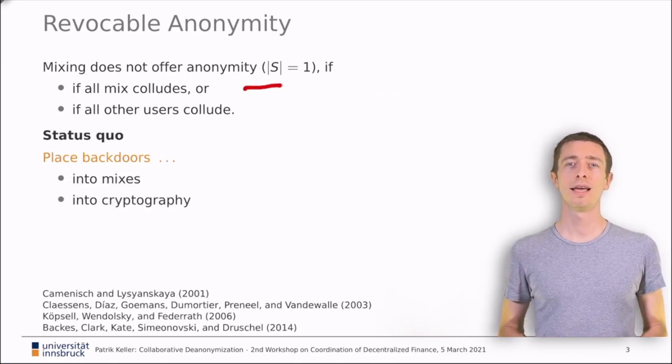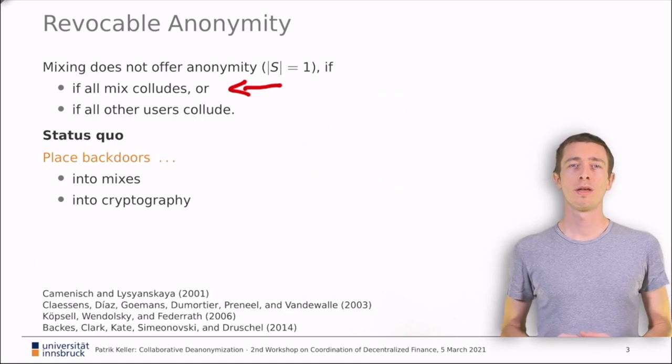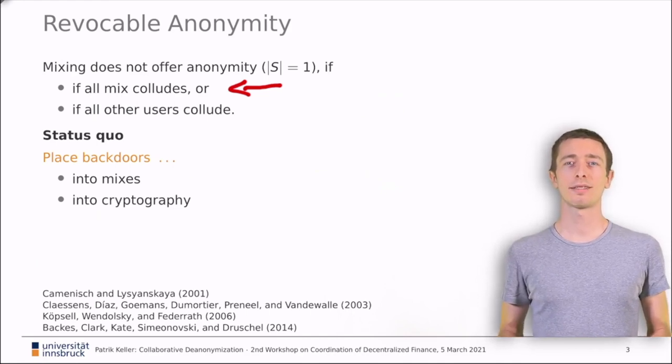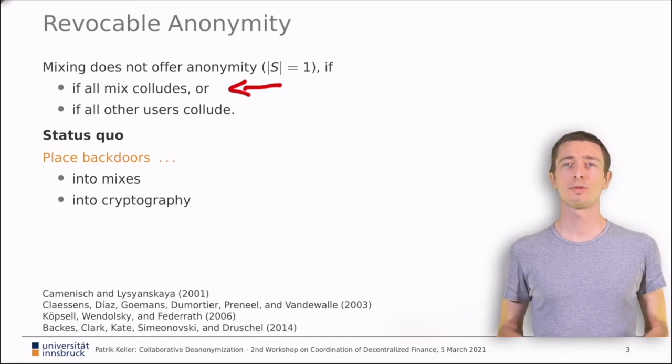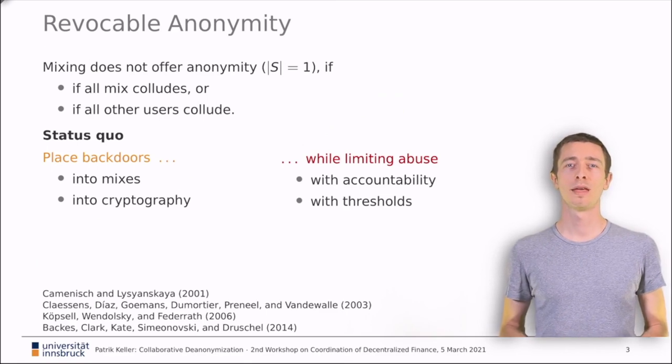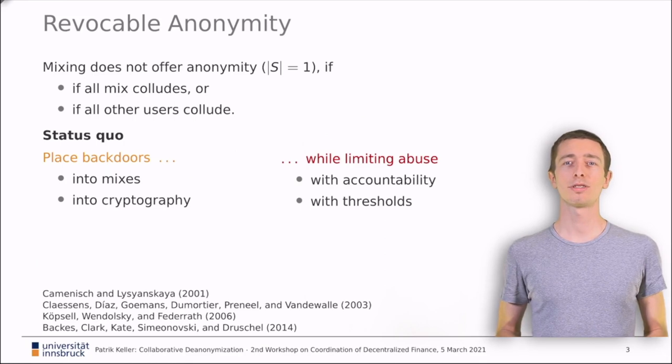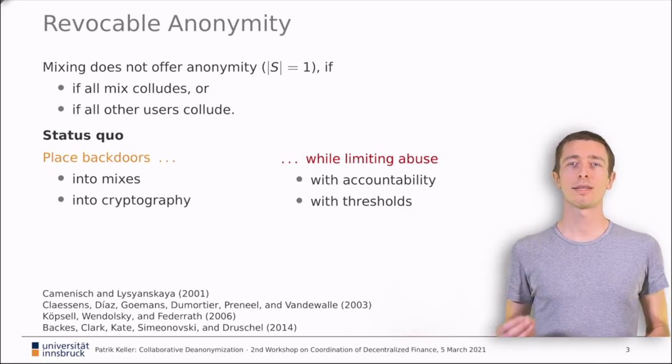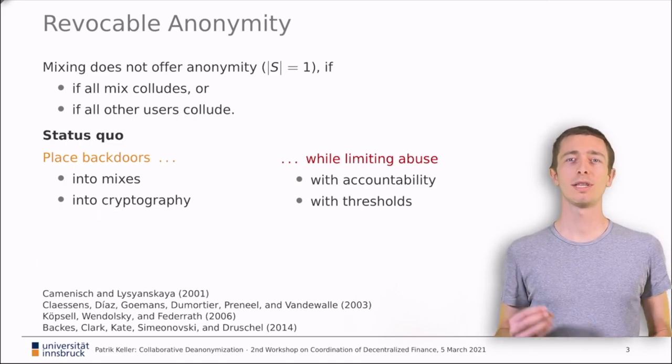The first option, collusion of mixes, has been researched for quite some time. Usually, it is done by putting backdoors into the system. Either you give a privileged party access to the mixes themselves such that they can observe each mix when it happens. Or you tweak the cryptography, for example by introducing a master key that defines the permutation of the messages. Of course, such backdoors are problematic because they might be abused. That's why all of the approaches we list here implement some measures to limit abuse. For example, one can make the backdoors accountable by adding a public counter indicating how many accesses have happened. Or one can add thresholds to the cryptography such that many mixes have to be observed before de-anonymization becomes possible.